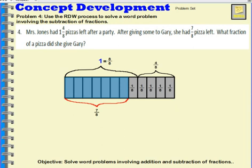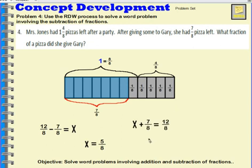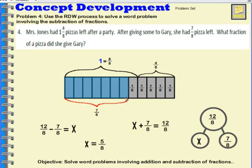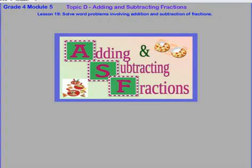We can use number sentences like before: 12 eighths minus 7 eighths equals x. 12 minus 7 is 5, so 12 eighths minus 7 eighths is 5 eighths. We might also see it as a number bond: 12 eighths is my whole, I gave some away — that's an unknown x — and I know 7 eighths is a part. So x plus 7 eighths equals 12 eighths.